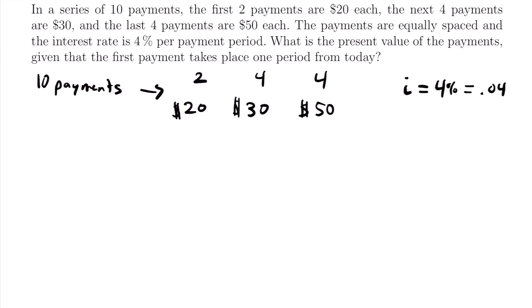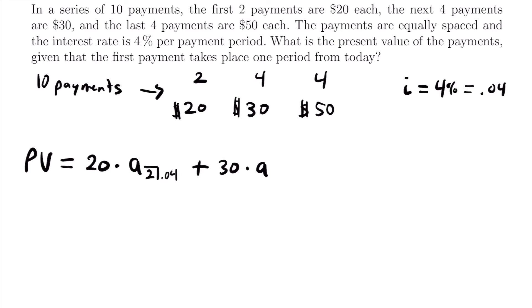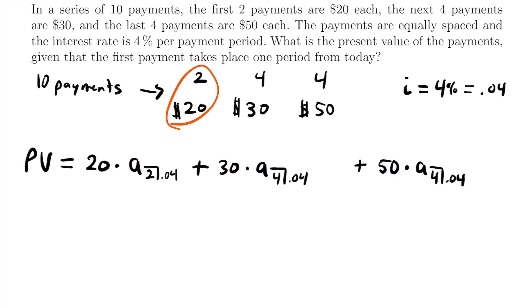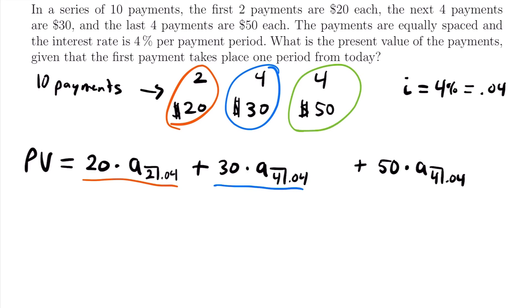Since the payments are different amounts, we handle each group separately. Starting with the first two payments of $20: PV contribution = 20 × A(2|0.04). Then the next four payments of $30: + 30 × A(4|0.04). Then the last four payments of $50: + 50 × A(4|0.04). However, we're not done — we still need to account for the timing of these later payments.